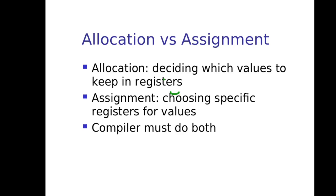Allocation versus assignment. Allocation means deciding which values to keep in registers. Assignment is actually choosing the specific register for particular values. In compiler we will need both of them.